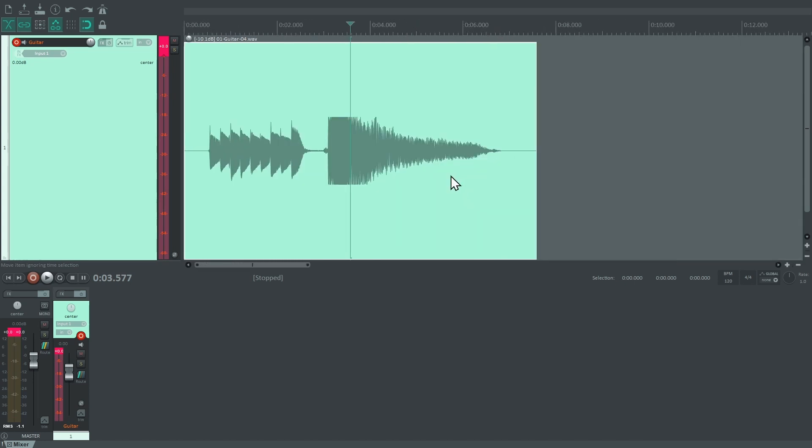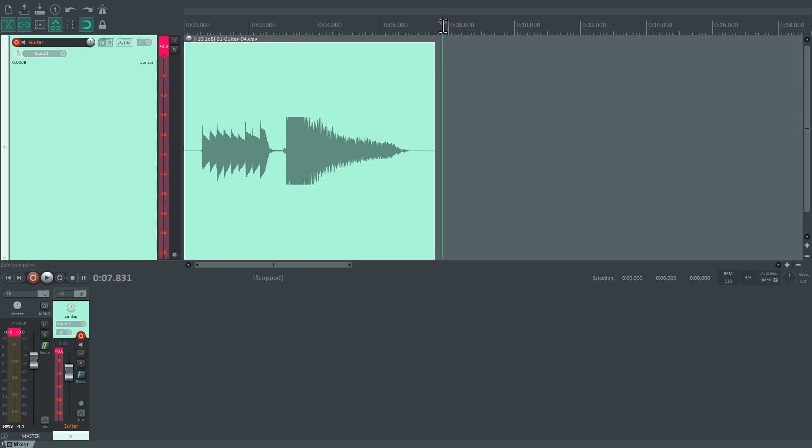That's why it's so important to properly set the recording levels beforehand on the audio interface. You want the signal to be loud enough that it is captured with high detail across a wide range of the AD converter, but not too loud so that clipping happens.